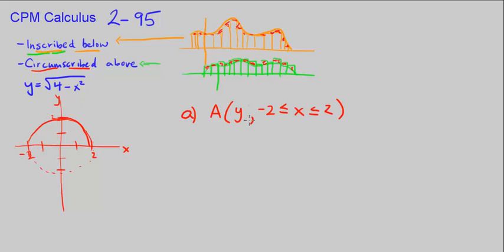For Part A, we want to approximate the area using four inscribed rectangles, so our rectangles go below the curve. We can put a rectangle here, and another rectangle here, because we can never go above our curve. At the far right, between x equals 1 and x equals 2, this rectangle has to have a height of zero because going up would take it above the curve. Likewise, on the left, between x equals negative 2 and negative 1, our rectangle also has a height of zero.